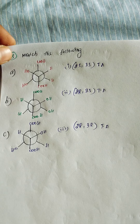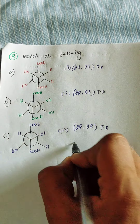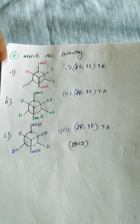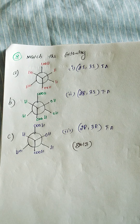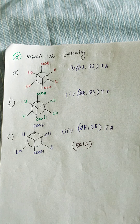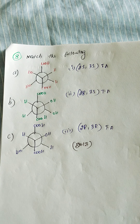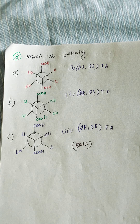Next question from Polytechnic TRB 2017. We have to match the structures — Newman projections with Fischer projections. All structures are in the staggered conformation. We need to determine the absolute configuration and match the structures correctly.